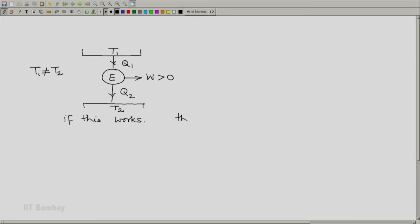then let us consider a situation where we have the same reservoirs. And now let us see whether we can have an engine, say E prime, which will produce work, say W prime. But instead of absorbing from the reservoir at T1, let it absorb Q2 prime from the reservoir at T2 and Q1 prime be rejected to the reservoir at T1.